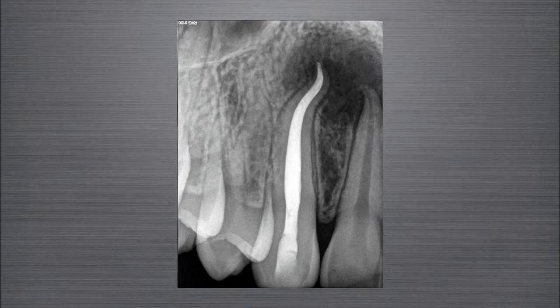As you can see, GuttaCore is very forgiving, allowing the operator to improve the result even after the carrier is placed. In most cases, GuttaCore will supply more than enough warm gutta-percha to obturate even the most challenging canals. However, in this tooth, additional gutta-percha was needed, and the Calamus Dual provided the solution. Remember, successful endodontic therapy is a result of applying art as well as science. Thanks for watching.